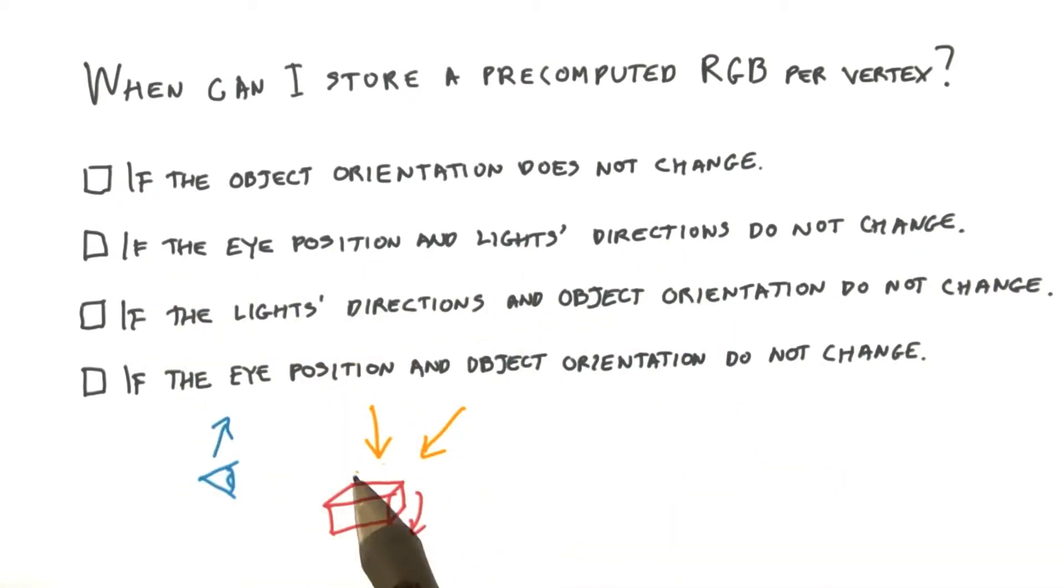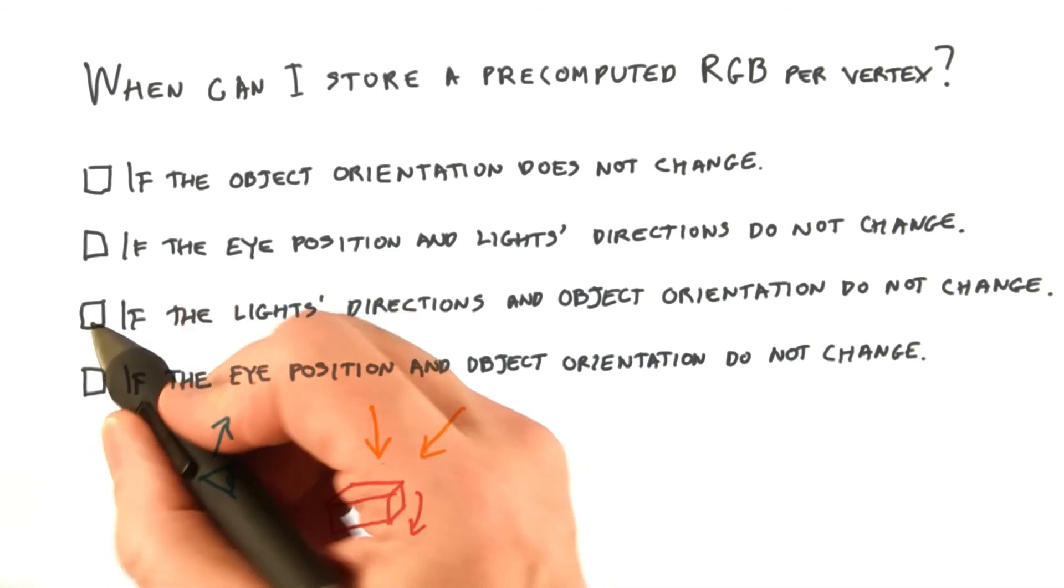The third answer locks down the light's directions and the object's orientation. The eye position is not locked down, and so can move and change the direction it is looking in. However, the two elements that affect the diffuse lighting equation are the light's directions and the object's normals. Eye direction is unimportant, as a diffuse material has the same shade from any direction it's viewed. So, this answer is correct.